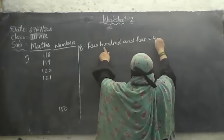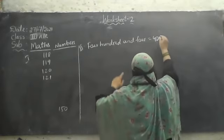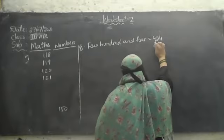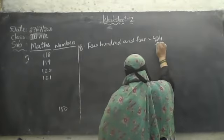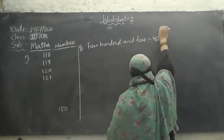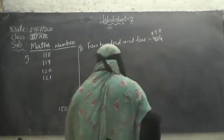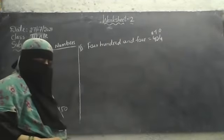First, this is the 100th place. 1, 10, 100. 1, 10, 100. This is 1, this is 10, this is 100. This, by this way, we have to complete it.